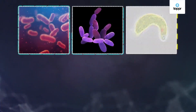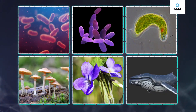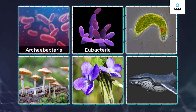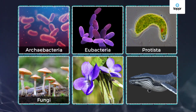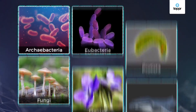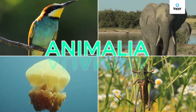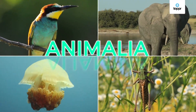From the incredibly tiny bacteria to the mighty blue whale, every living organism on the planet Earth were grouped under the Six Kingdoms: Archaebacteria, Eubacteria, Protista, Fungi, Plantae and Animalia. Among these, the most diverse one is the Animal Kingdom, or Animalia.